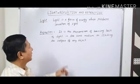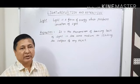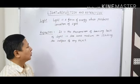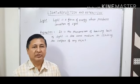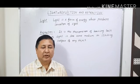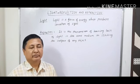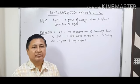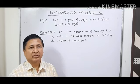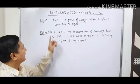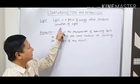Friends, today we are going to take a topic: Light, Reflection and Refraction. This is the name of the chapter. First we should know what is light. Light is a form of energy which gives us sensation of sight. When light falls on objects, it is reflected, and this reflected light is received by our eyes and we are able to see the object. So we can define light as a form of energy which produces sensation of sight.